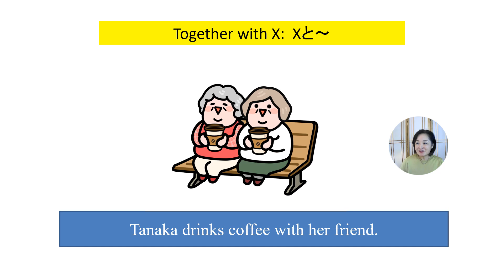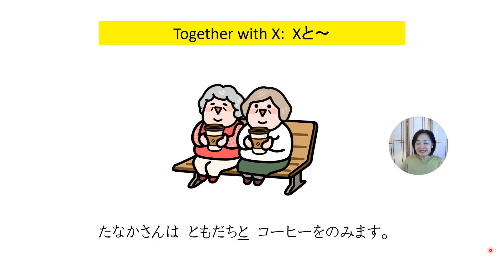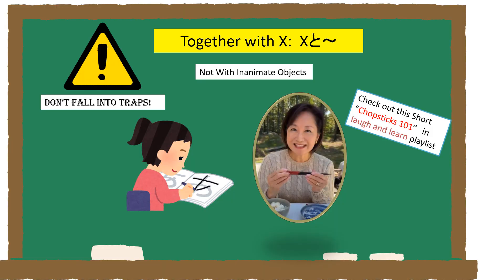How do you say 'Miss Tanaka drinks coffee with her friend'? 田中さんは友達とコーヒーを飲みます。 Please remember one important rule: the sentence structure is X と, where X is a person or animate object. You cannot use と with inanimate objects like pens.